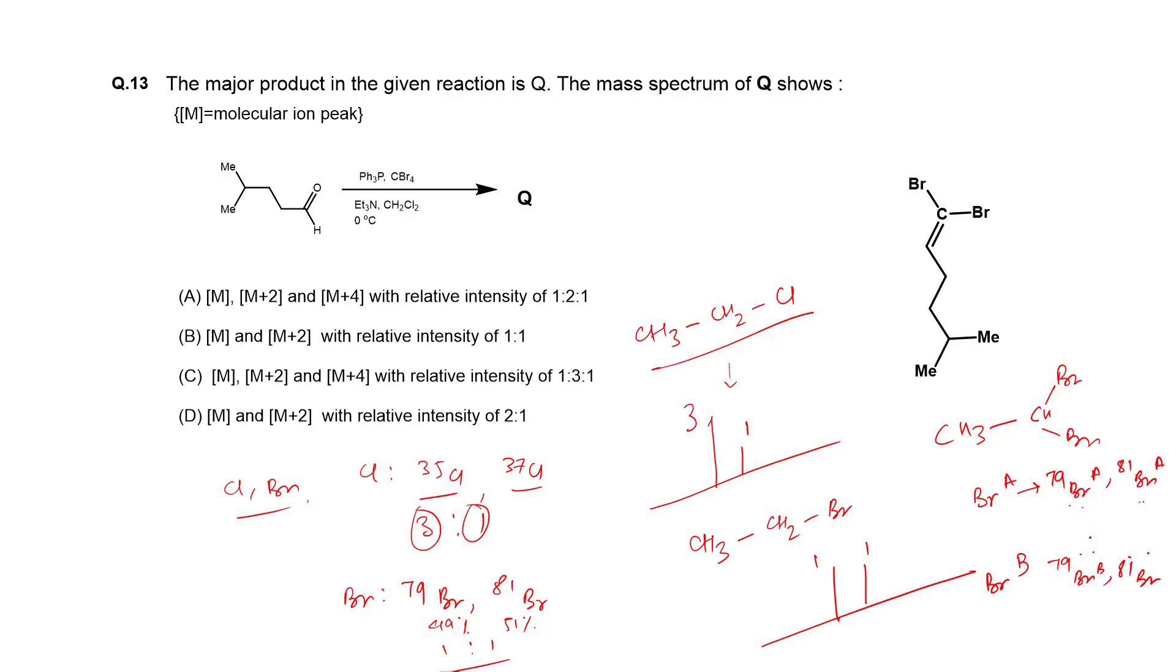The simple ratio is 1 is to 2 is to 1, and the peak will be 1 is to 2 is to 1. So the option having 1 is to 2 is to 1 is the right answer.